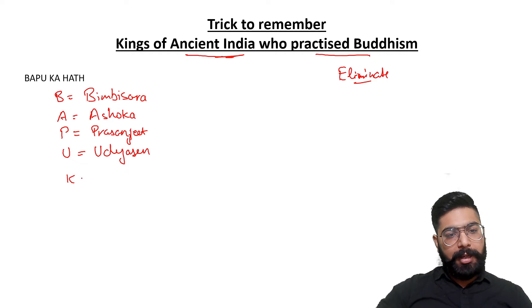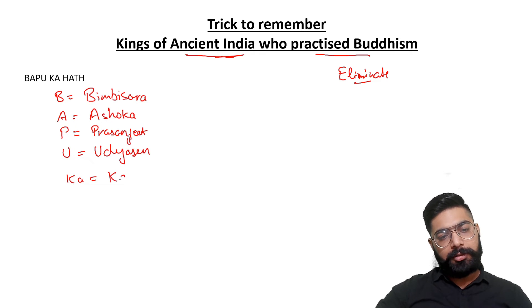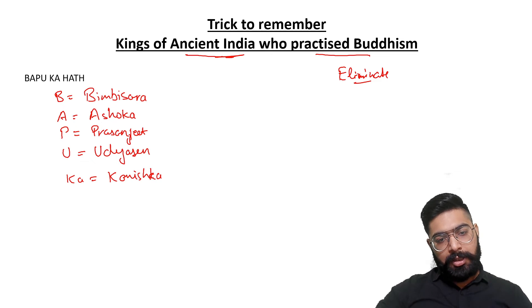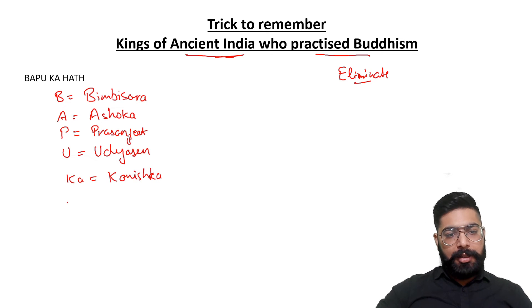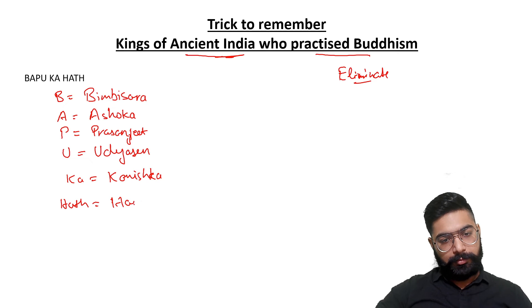K and A remain. K is Kanishka. And H is Harsh Vardhan.